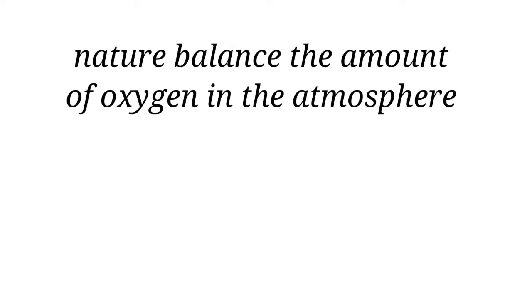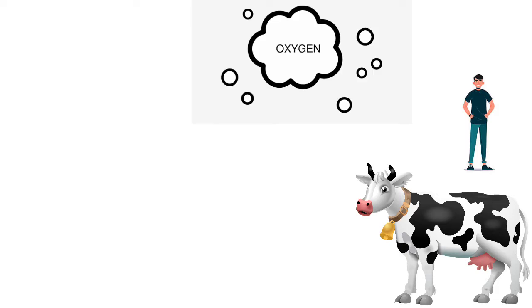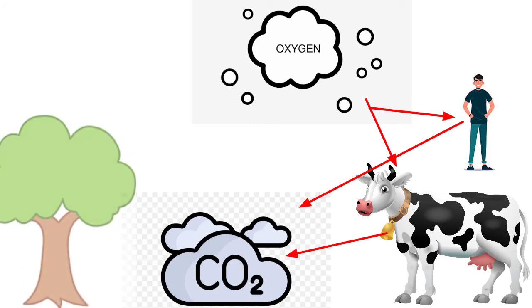Nature balances the oxygen in a very simple way. Animals, including human beings, use the oxygen that is present in the atmosphere for respiration and they release carbon dioxide. Now the carbon dioxide is released in the atmosphere, and this carbon dioxide is used by the plants.